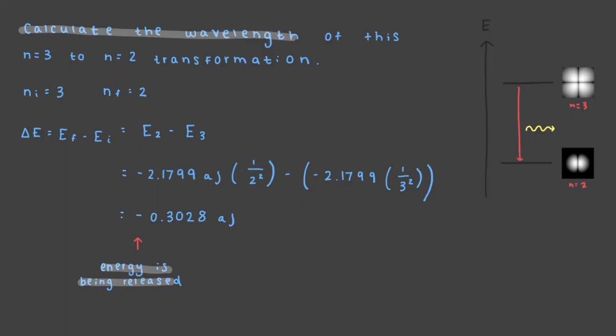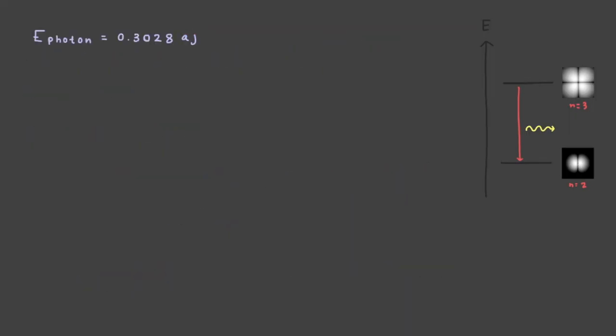The photon energy of this light, however, is always positive. So E photon is equal to 0.3028 attojoules. Now that we have our energy value, let's plug this back into our light equation. Notice how the wavelength is the same. This makes perfect sense, since the same light that causes the absorption will be what is emitted in the reverse process.